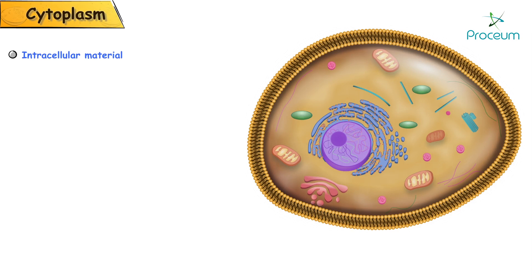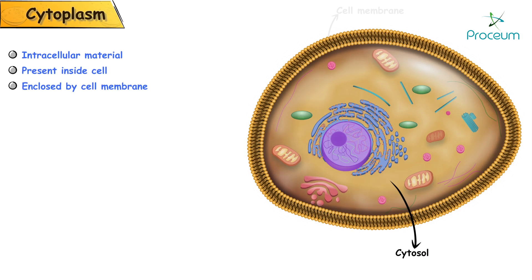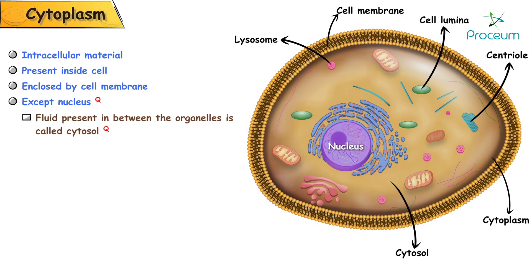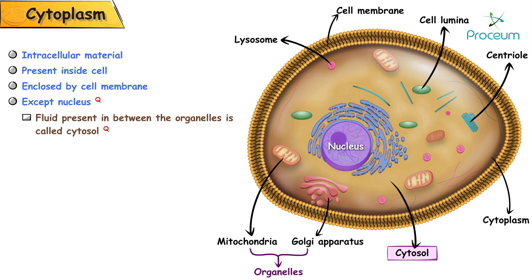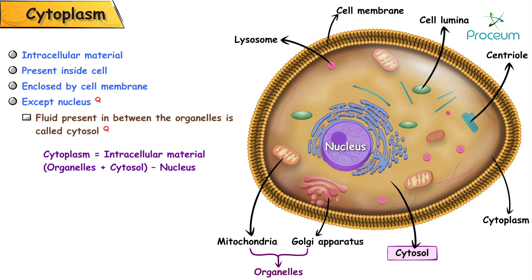Cytoplasm is the intracellular material which is present inside the cell and is enclosed by the cell membrane. The nucleus, however, is not considered to be part of the cytoplasm. Within the cytoplasm there are many organelles, and the fluid present in between the organelles is called cytosol. Therefore, cytoplasm is intracellular material which includes organelles and cytosol, minus the nucleus.